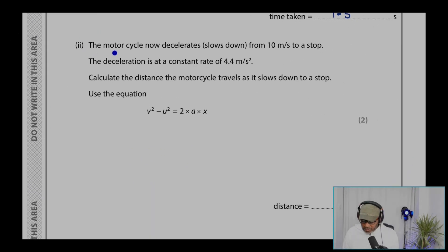Part 2. The motorcycle now decelerates, slows down from 10 meters per second to a stop. The deceleration is at a constant rate of 4.4 meters per second squared.